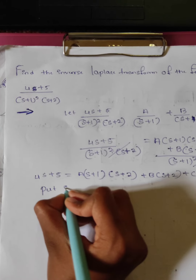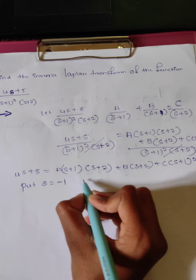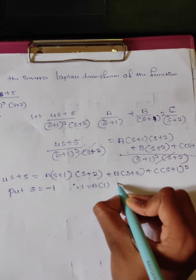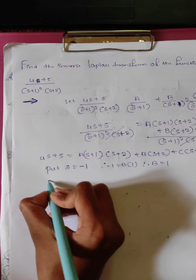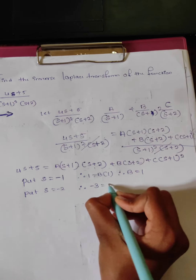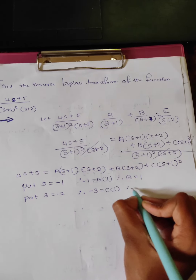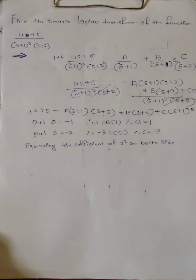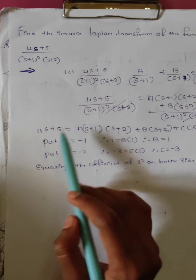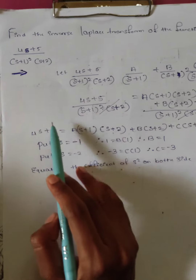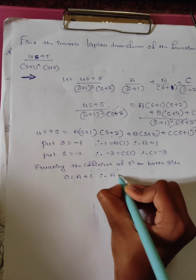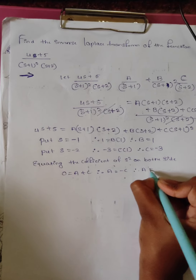Put s equal to minus 1: therefore B is equal to — putting s equal to minus 2, we get v equal to minus 2, therefore C equal to minus 3. Equating the coefficient of s squared on both sides, the right-hand side coefficient is 0, so A plus C equals 0, therefore A equals minus C, therefore A equals 3.